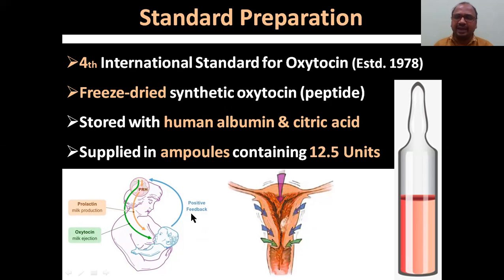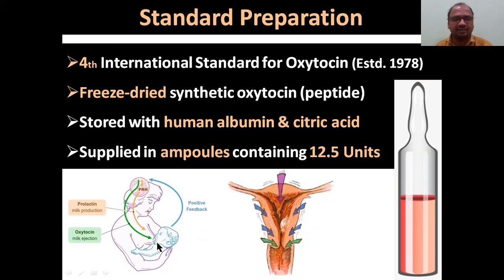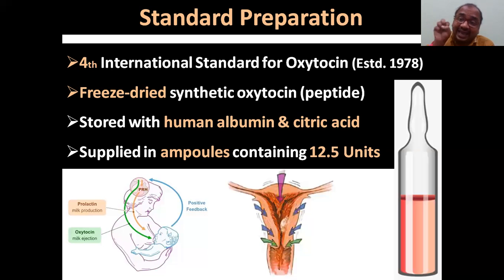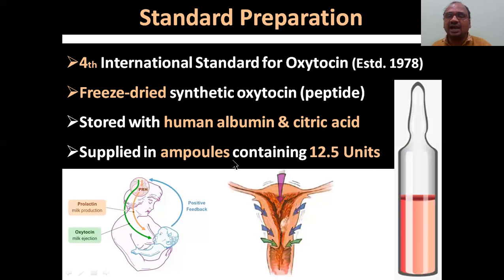Oxytocin has two important actions. First is milk ejection from the breast — from mother to baby. Note that prolactin increases milk production whereas oxytocin causes the ejection (pressure) of milk from the breast. Prolactin synthesizes milk; oxytocin ejects it. The second important characteristic is contraction of the uterus.